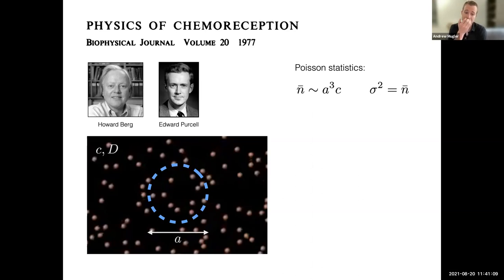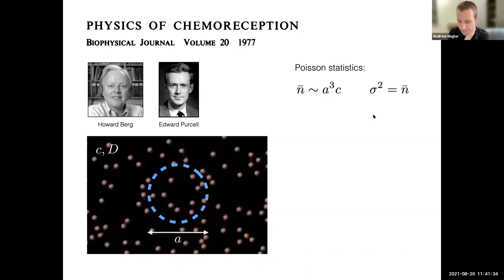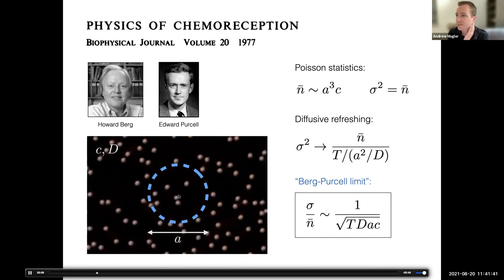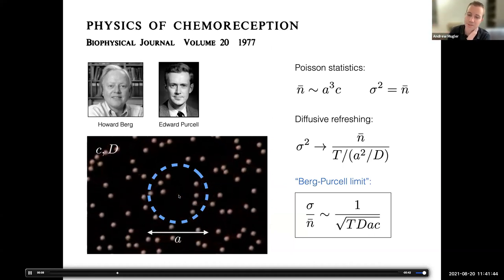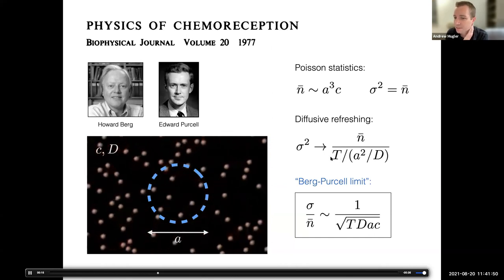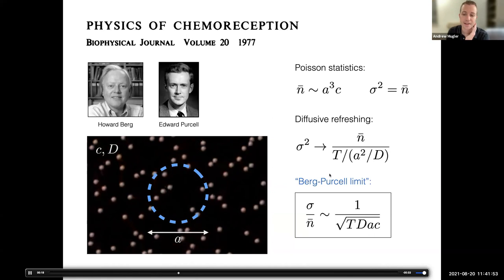And so their approach was to treat the cell as a permeable sphere essentially and ask how many molecules of the nutrient that it's trying to track would fill the cell volume. And that's easy you just multiply the volume by the background concentration. And, of course, that number has its own noise because diffusion is a Poisson process and so the variance equals the mean. And they also recognize that if the cell is willing to wait, then diffusion will sort of refresh the molecules and you can get multiple independent measurements which can reduce this noise. And so you calculate the typical diffusion time and that's how many measurements you can make in the amount of time t that the cell is willing to wait.